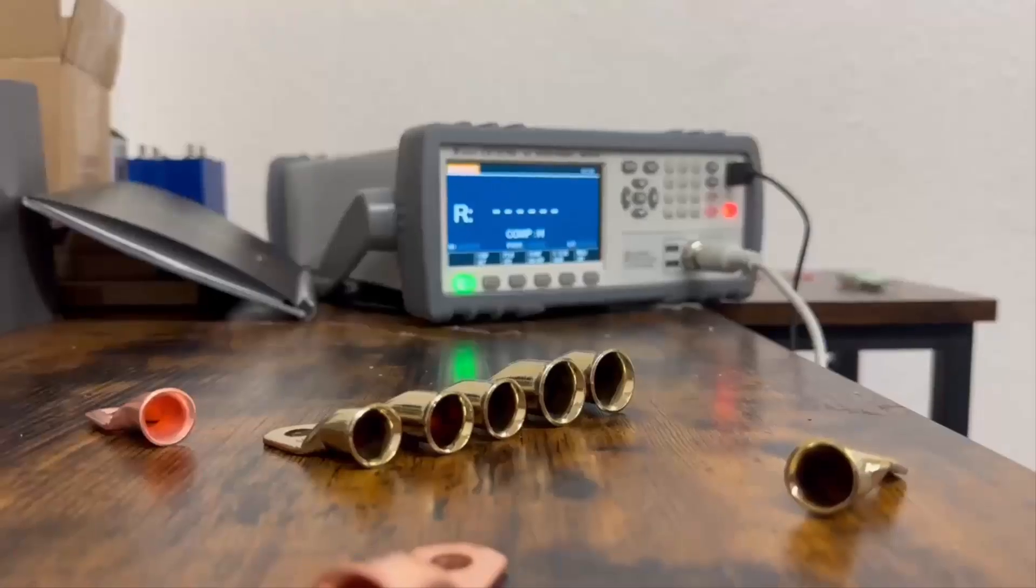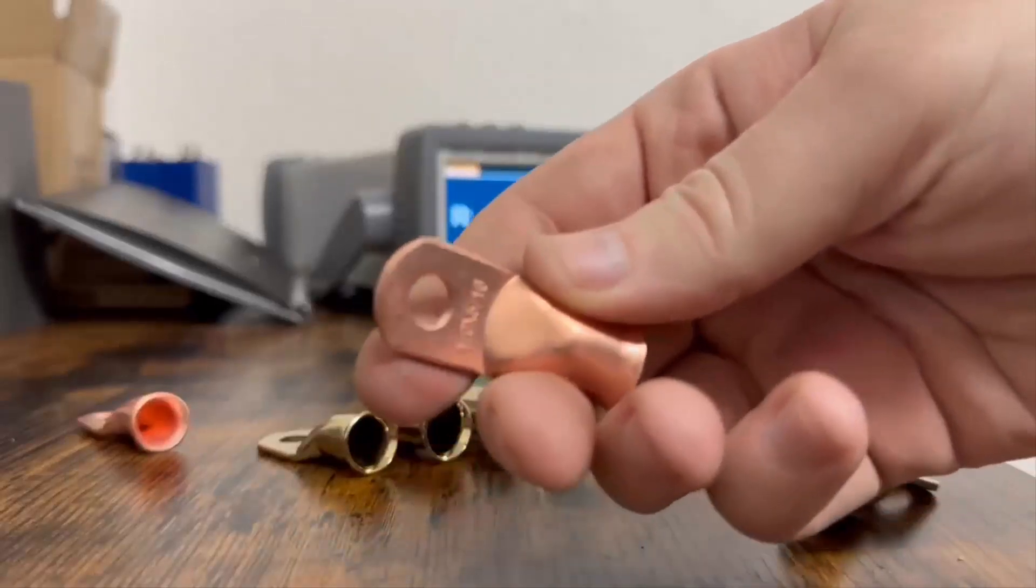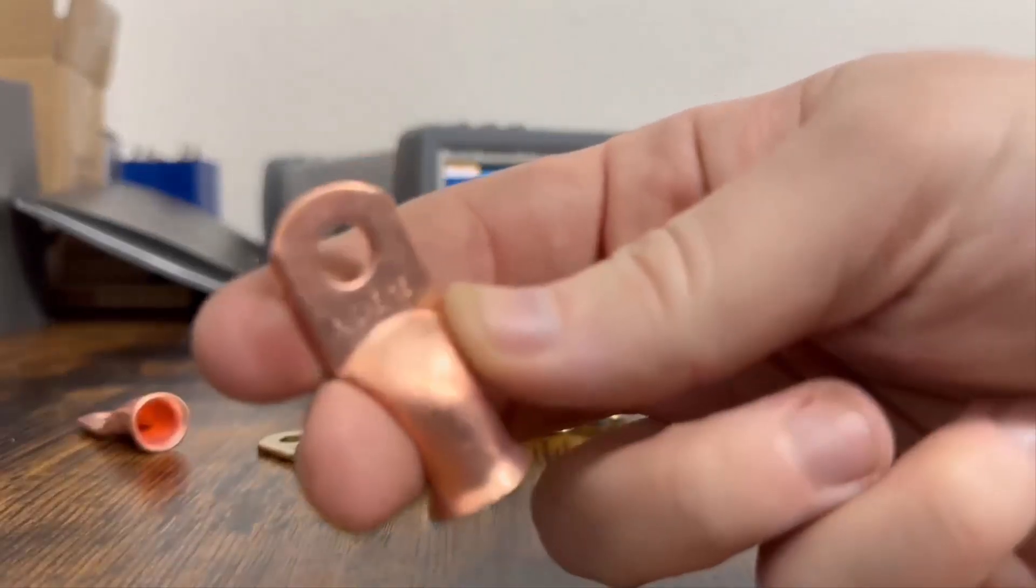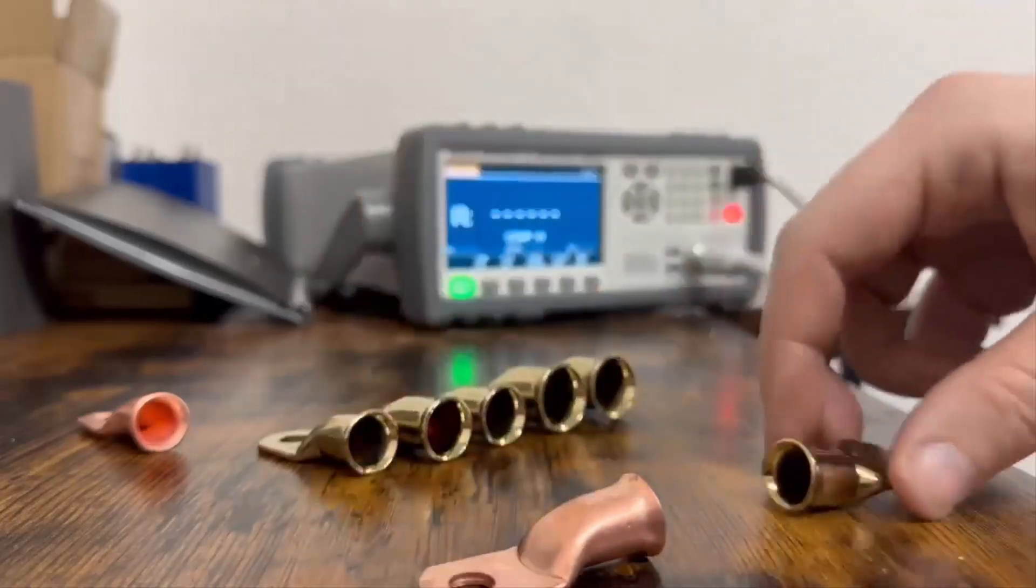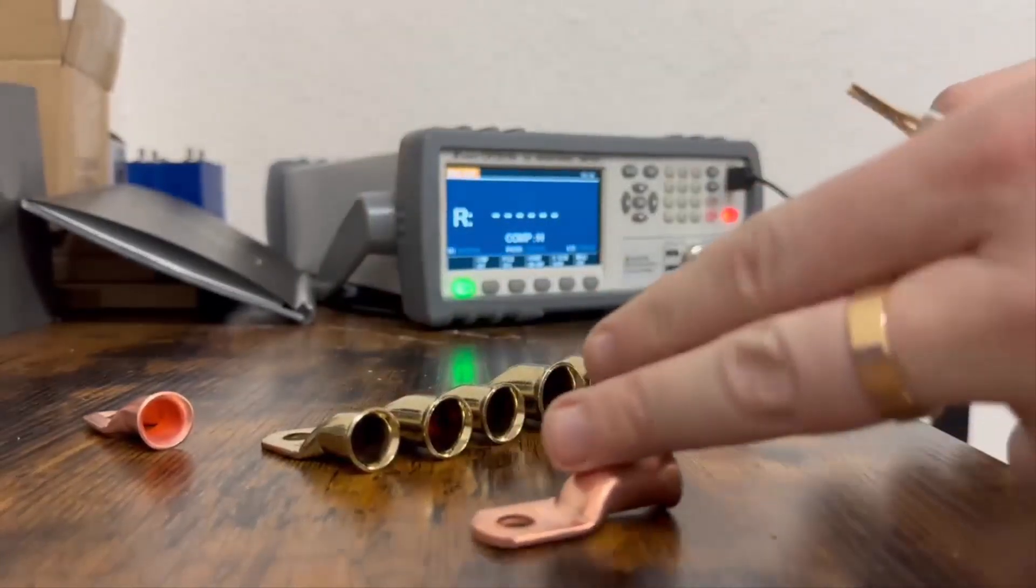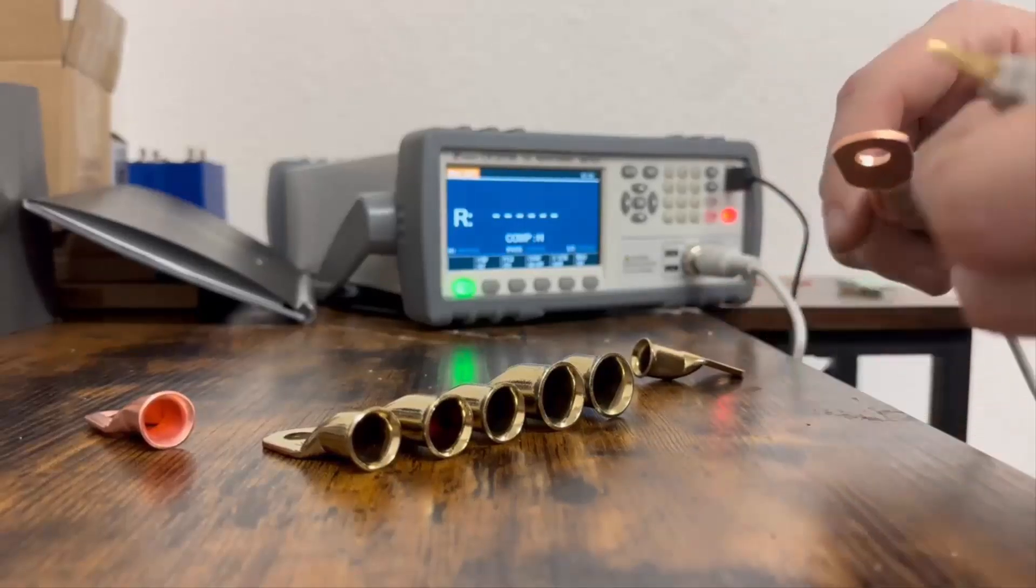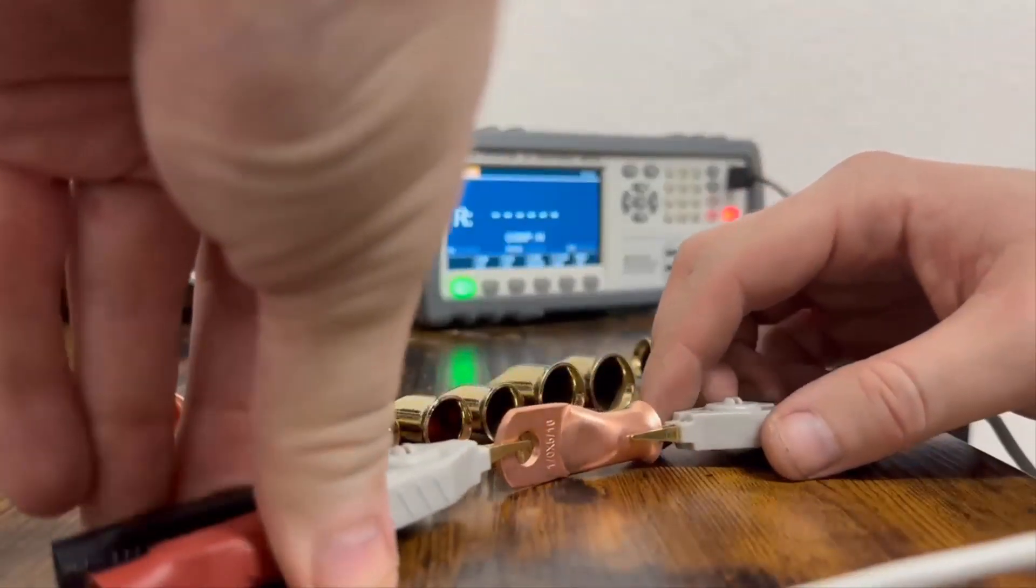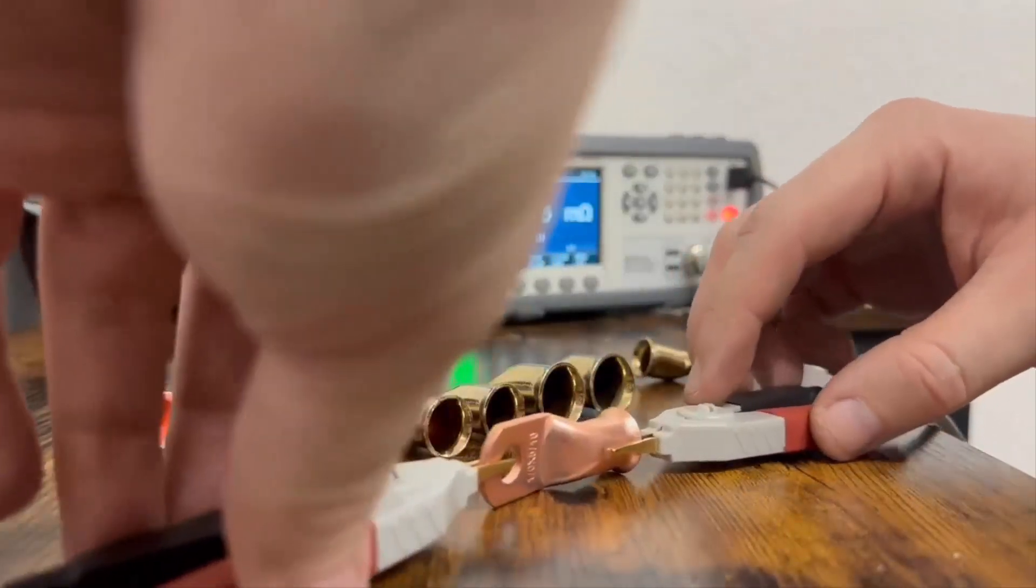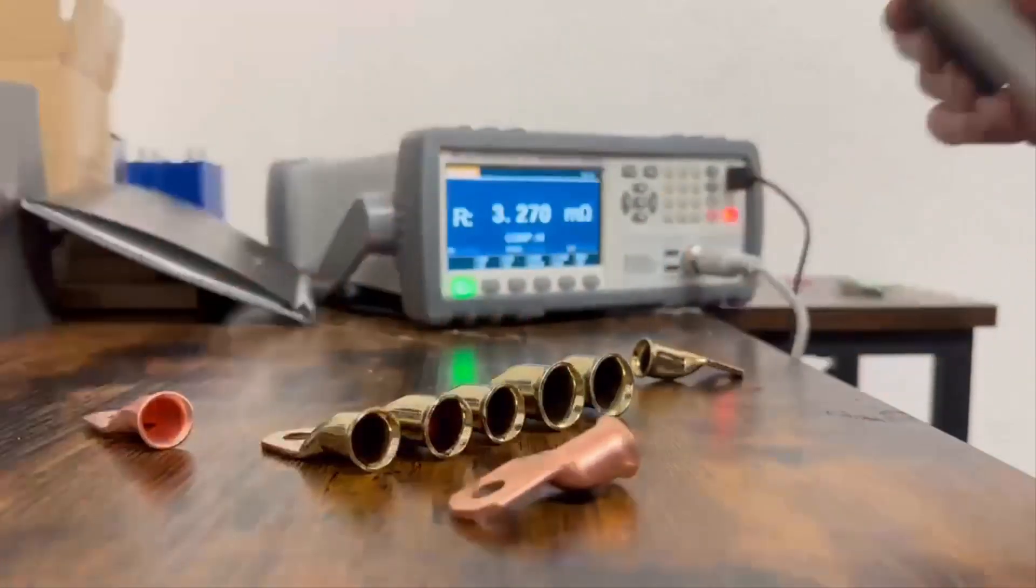First we're going to test the resistance of a standard one-zero American wire gauge lug. This is a 5/16 inch inner diameter lug and is pure copper. When we measure the direct current resistance of this lug, we get a result of approximately 0.72 milliohms.